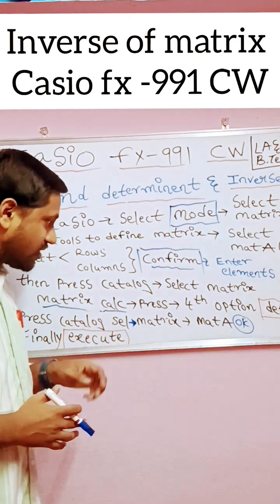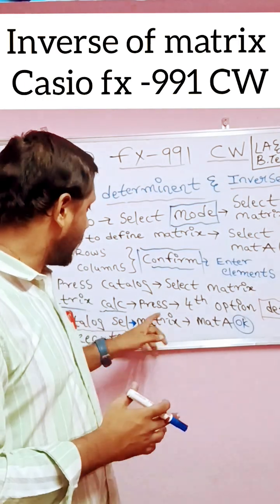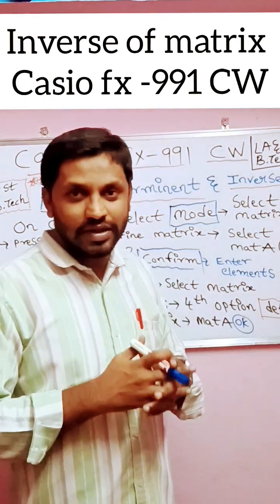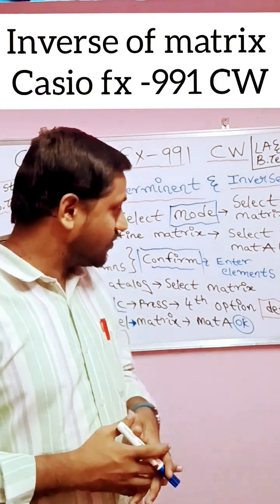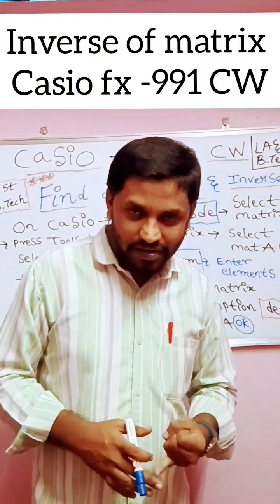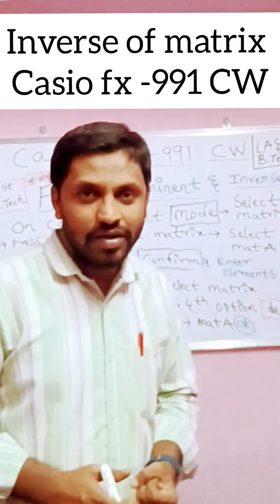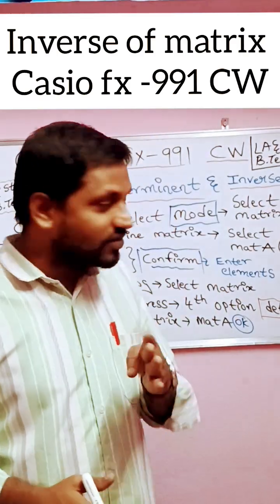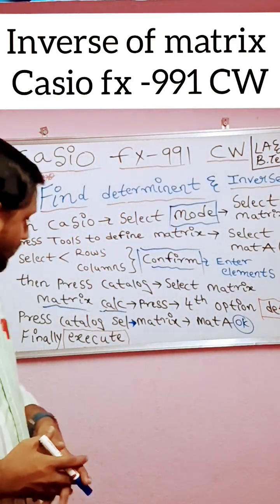Then press fourth option to get determinant easily. The options are: first option is matrix squared, second option is matrix cubed, third option is inverse of a matrix, fourth option is determinant.